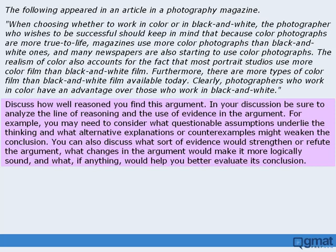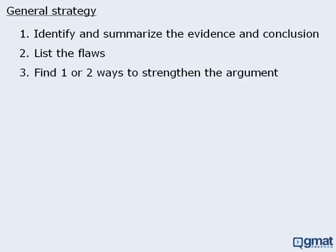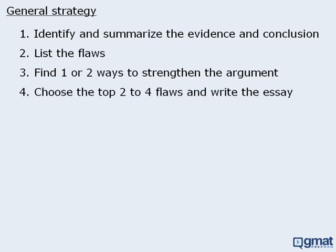The general strategy for handling this writing task is as follows. The first step is to deconstruct the argument by identifying and summarizing the evidence and the conclusion. Next, list the flaws in the argument. Once you have identified 3-5 flaws, find one or two ways to strengthen the argument. At this point, choose the top 2-4 flaws and write your essay in the predetermined format, which we will discuss in an upcoming lesson.